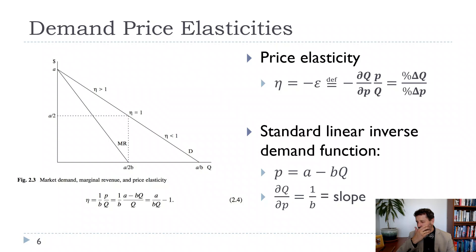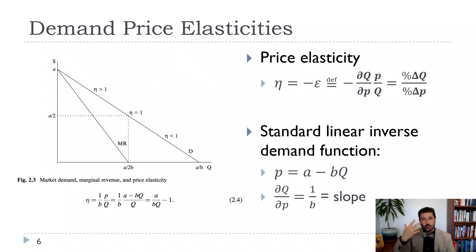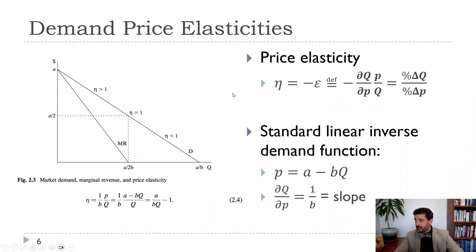Now, our price elasticity — different textbooks deal with it a little bit differently. Demand always slopes down, so when we have a downward sloping demand, the slope and therefore what we'd usually think of as elasticity is going to be negative. What this book does is use eta — this little n — which we want to be positive. So we're just going to call it the negative of epsilon, or the negative of what some books call the elasticity.